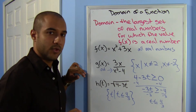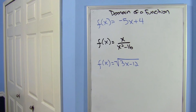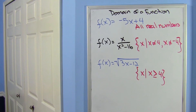So the three different scenarios are: all real numbers, all real numbers except two specific values (a gap), and values restricted to a certain range. Go ahead and find the domain of these three functions — pause the video. Here are your answers; I hope you got them right.